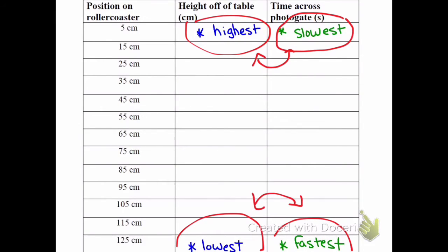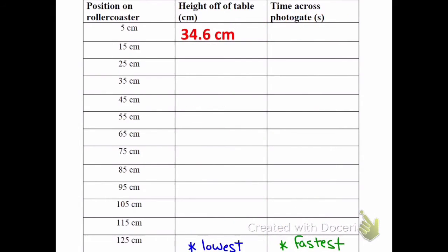And that ties right into what we've been talking about with potential and kinetic energy and their relations. So our actual data, which is what I'm going to be using to show you the calculations, was that the height in the first position was 34.6 centimeters and the time across the photo gate was 0.0500 seconds. These are going to be the numbers I used to show you some sample calculations.